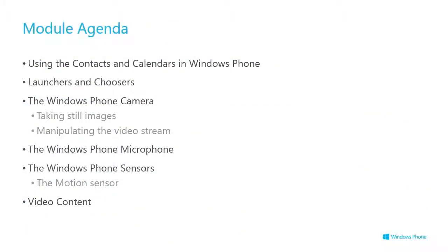In this module we're going to look at using contacts and calendars in Windows Phone, launchers and choosers to launch into first-party app experiences, the Windows Phone camera, briefly the microphone, Windows Phone sensors focusing on the new Windows Runtime APIs for commonality with Windows 8, and a brief mention of video.